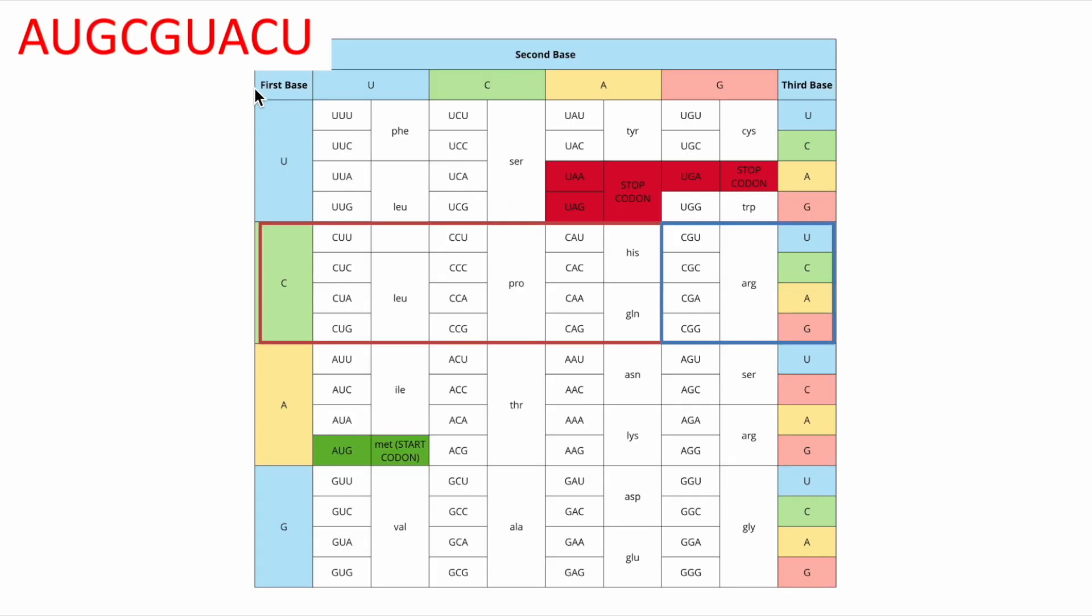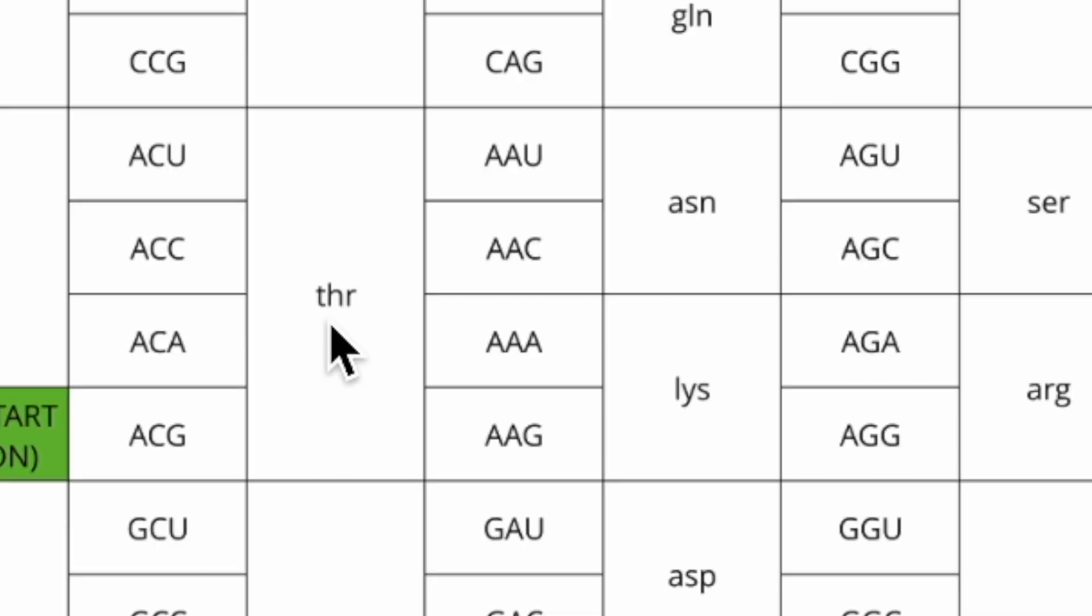Okay, let's do our last codon here in this RNA sequence just for practice. A, so we'll start here. C, we'll come down. And then U, we find U over here, that corresponds to THR, which is threonine.